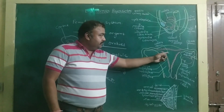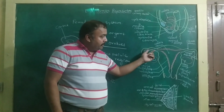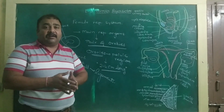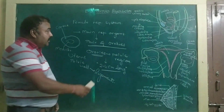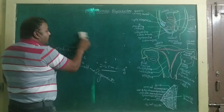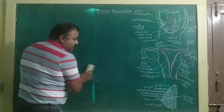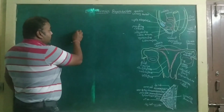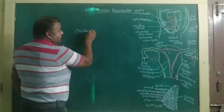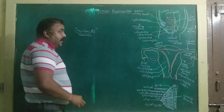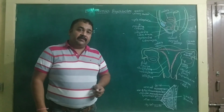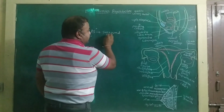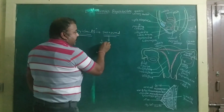The uterus, oviduct, and cervix form the accessory reproductive ducts of the female reproductive system. The oviducts are also known as uterine ducts, or by the third name, fallopian tubes. The oviducts are not attached to the ovaries, but they surround the ovaries with the help of a funnel-shaped structure.